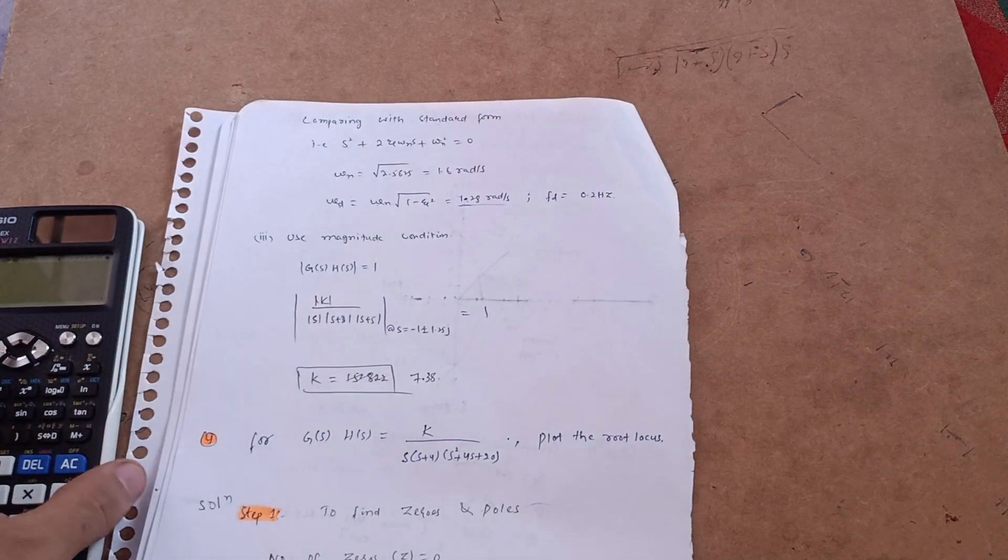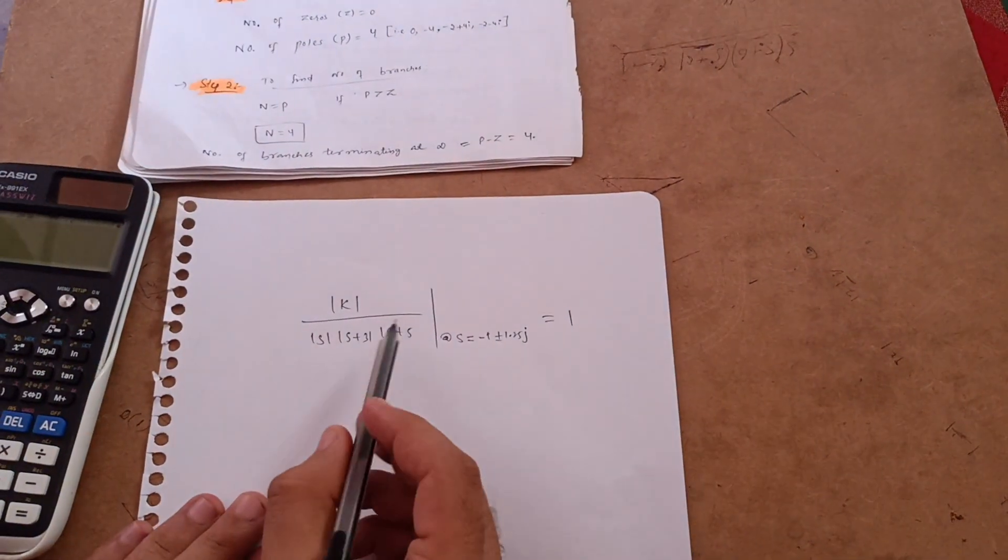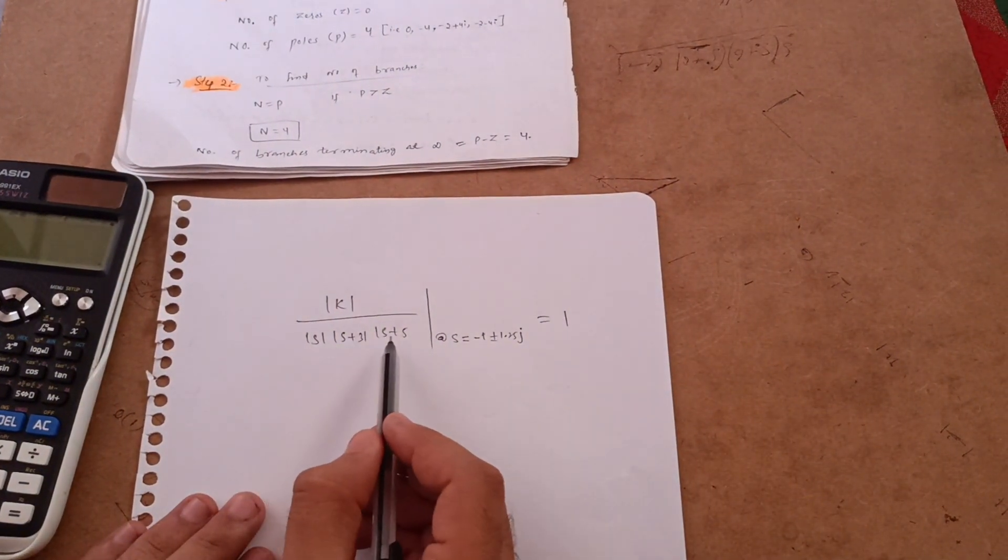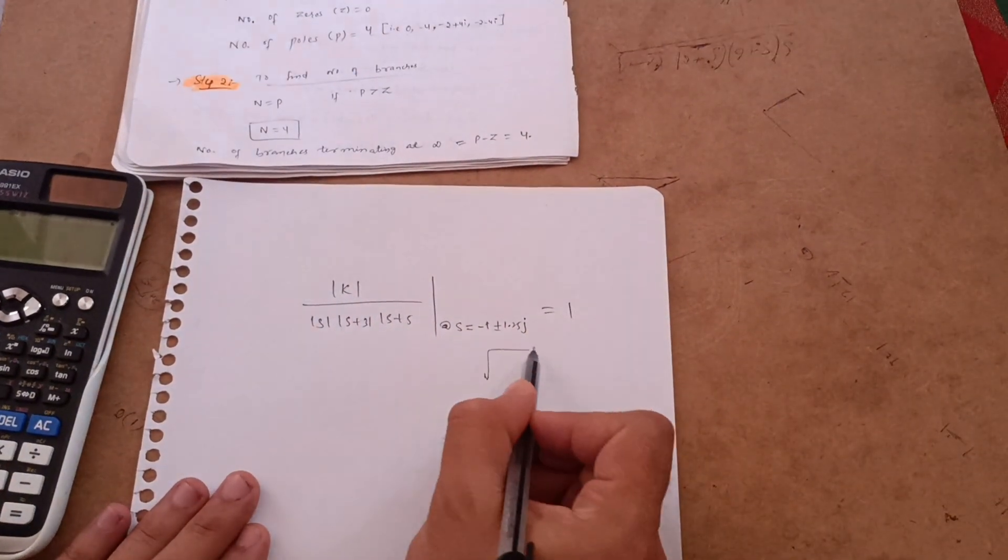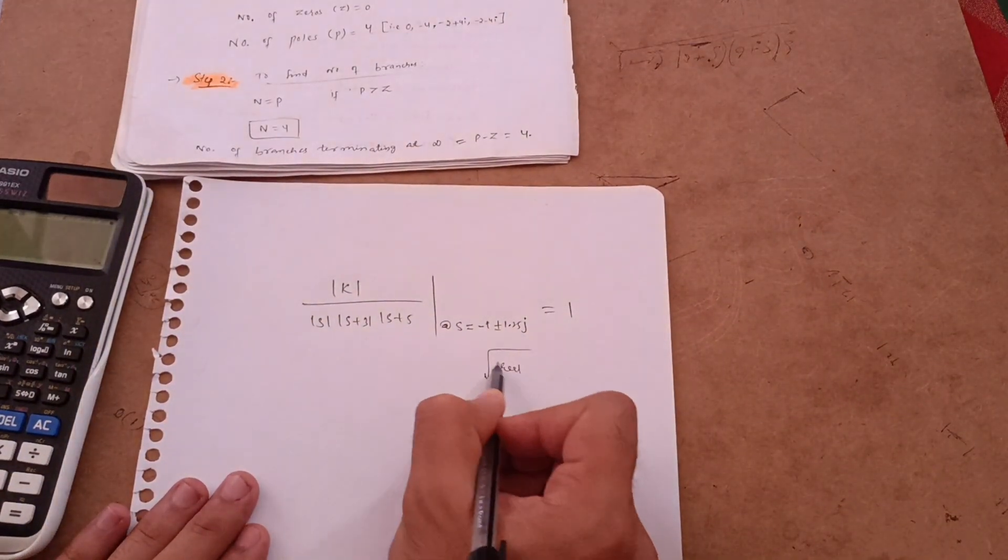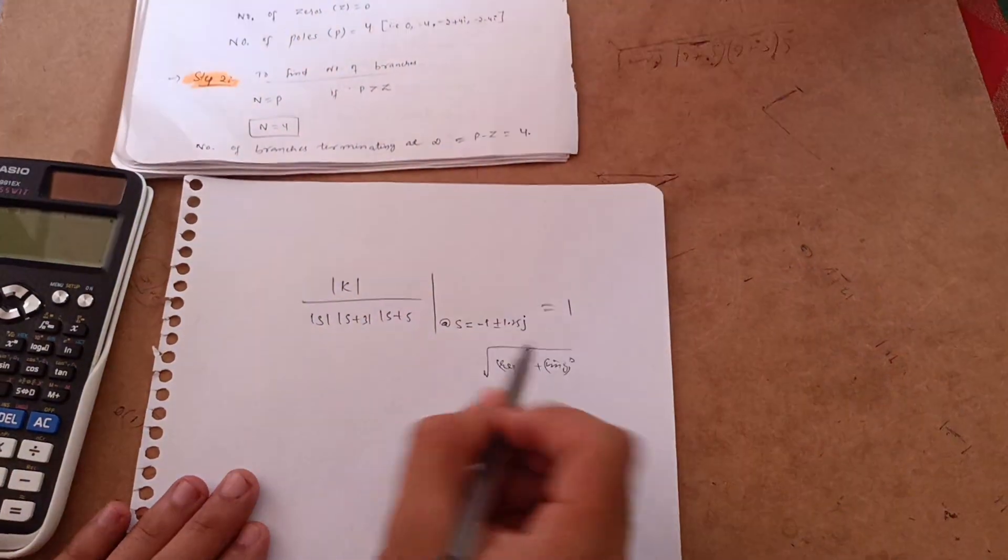Now how to calculate this value I will show you in this particular video. It is k upon s into s plus 3 s plus 5, right? So magnitude formula is under root of real square plus imaginary part square, imaginary part whole square.